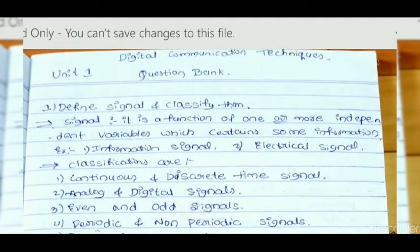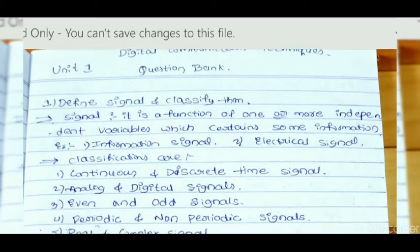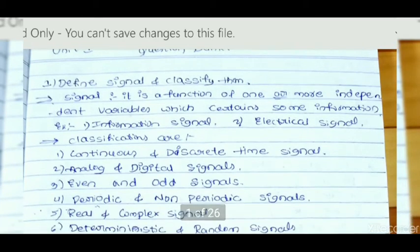Today I am going to discuss digital communication techniques. First, define signal and classify them. A signal is a function of one or more independent variables which contains some information. Example: information signal, electrical signal.